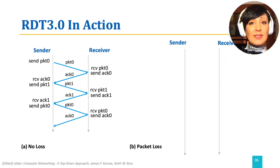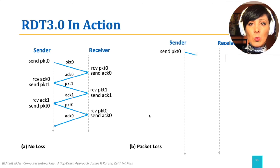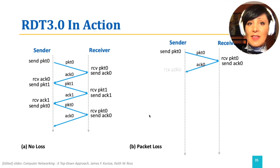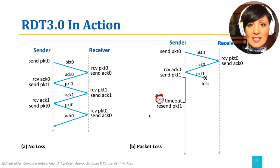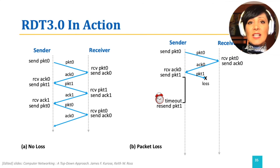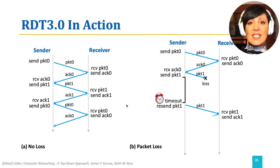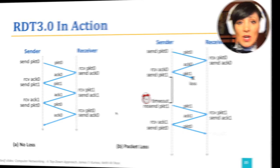Now, let's say a loss happens in transmission of packet 1. The sender will not notice this until its timeout clock goes off. When the timeout happens, the sender resumes the process by sending the packet with sequence number 1 again.